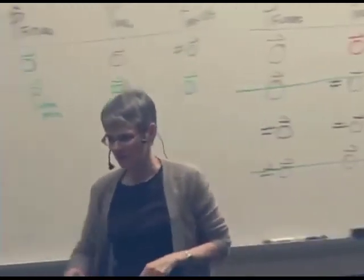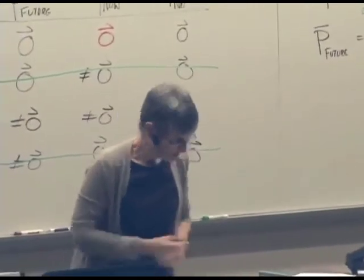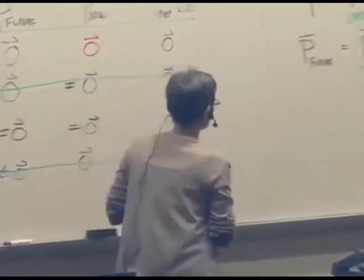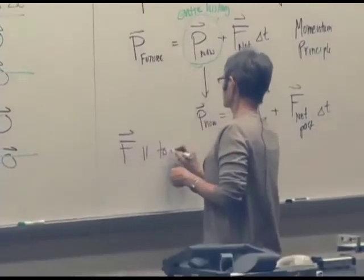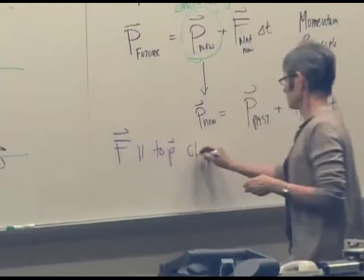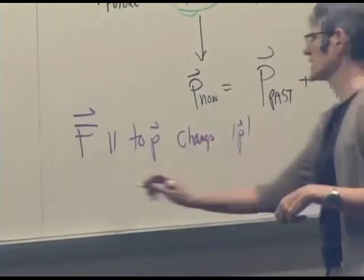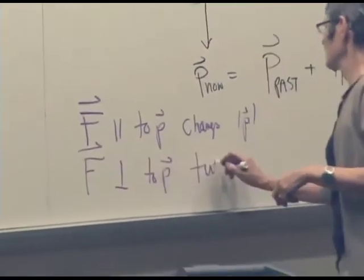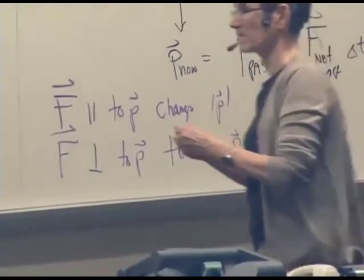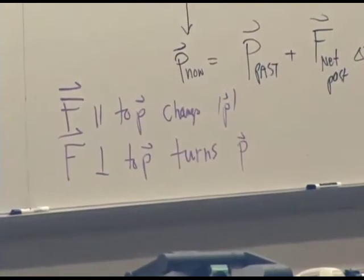So all that comes from that equation. All these possibilities we can make decisions about simply from that equation. So we'll write down, so F parallel to P changes speed, magnitude of P, and F perpendicular to P turns the momentum. Okay, let's see if we can answer a question, a couple of questions about this.